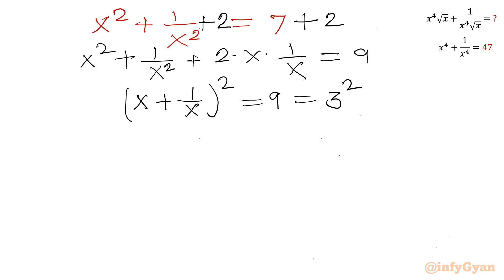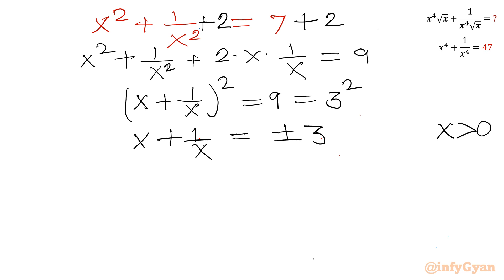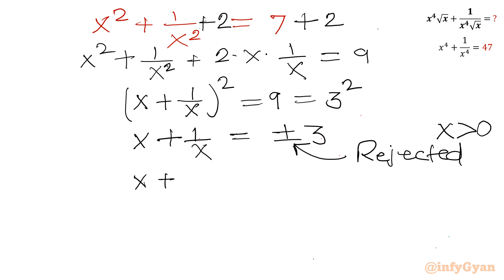So I can write (x + 1/x)² equal to 9, which is 3². Taking square root gives x + 1/x equal to plus or minus 3. Since x is positive, x + 1/x cannot be negative, so we reject the negative value and accept x + 1/x = +3.